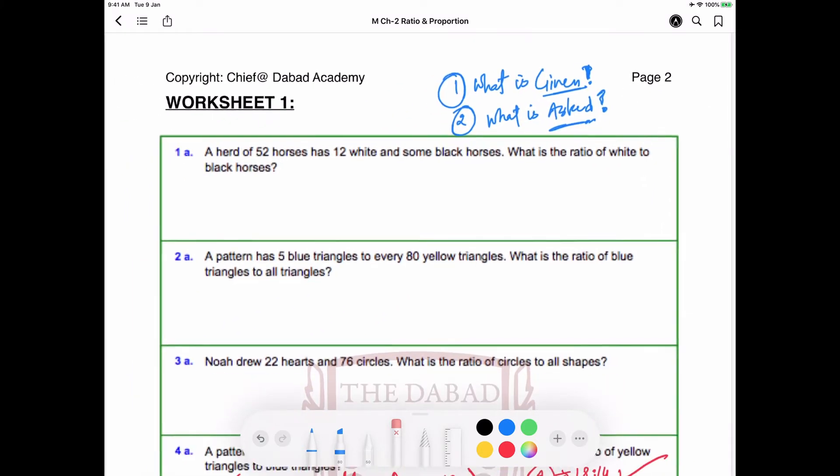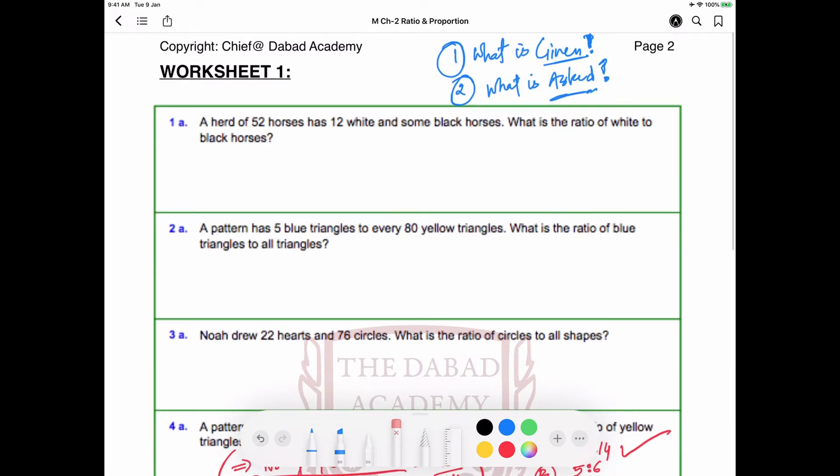For example, we have the first question: a herd of 52 horses has 12 white and some black horses. We are given the total number of horses is 52 and the number of white horses is 12. It has been specifically mentioned that there are some black horses, so we have to find out the number of black horses.